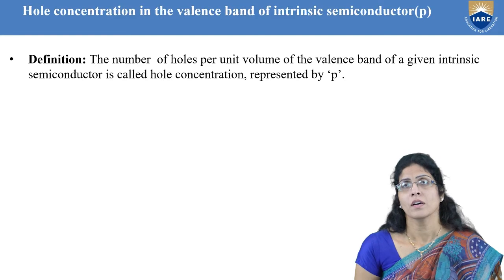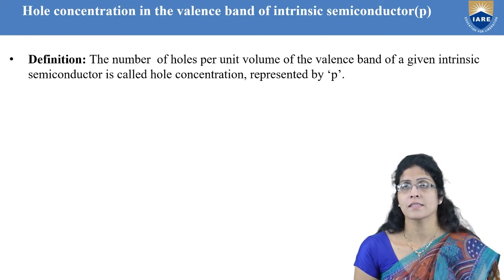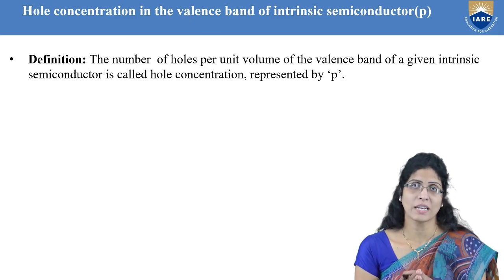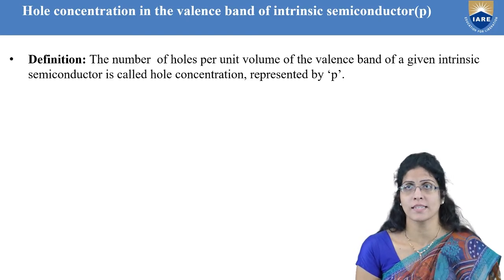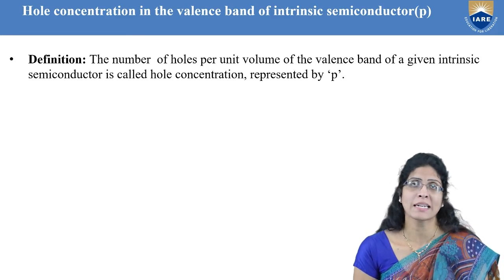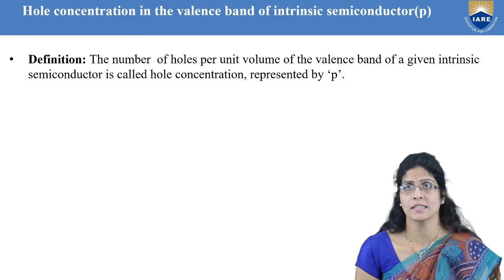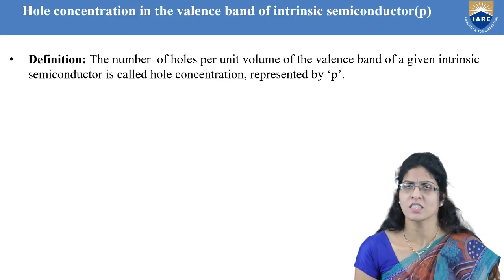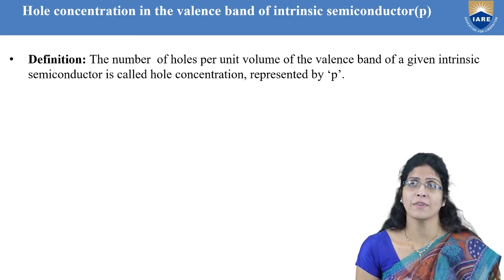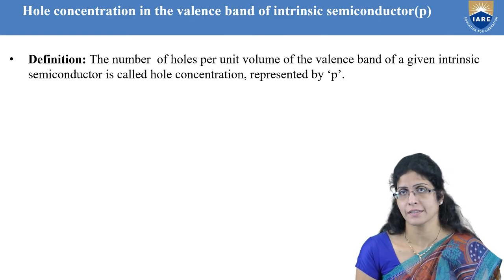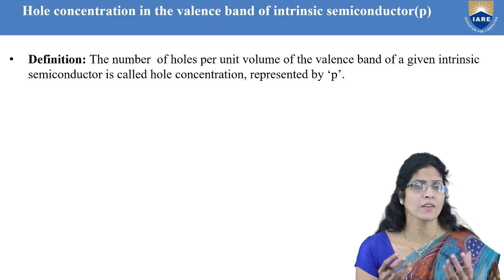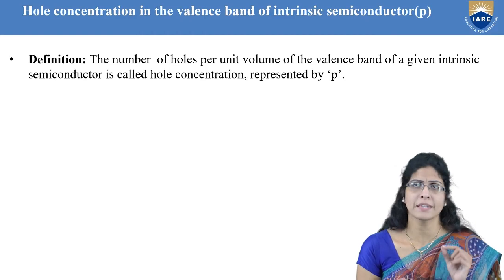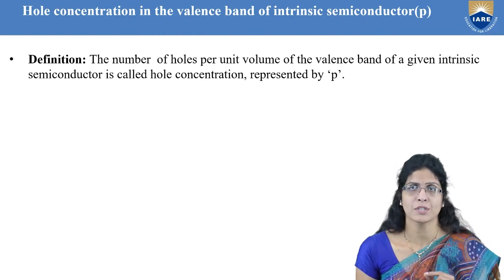We now need to calculate the number of holes per unit volume, which is the hole concentration in the valence band. The definition: hole concentration is the number of holes per unit volume in the valence band of a given intrinsic semiconductor. Since we have raised the temperature, holes now exist throughout the valence band volume, so we express it per unit volume.